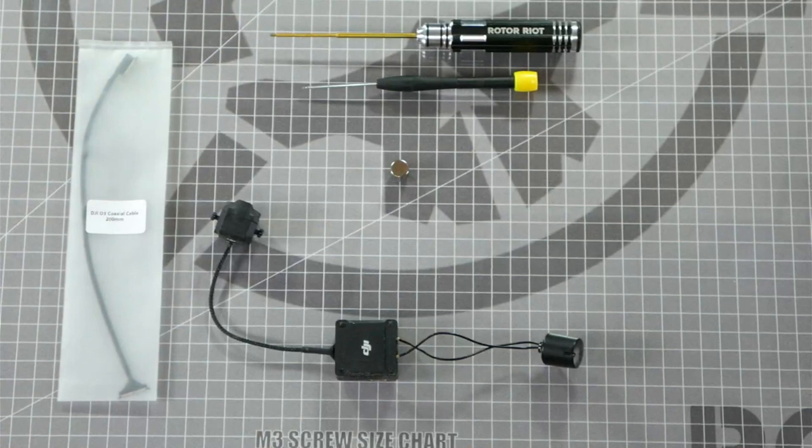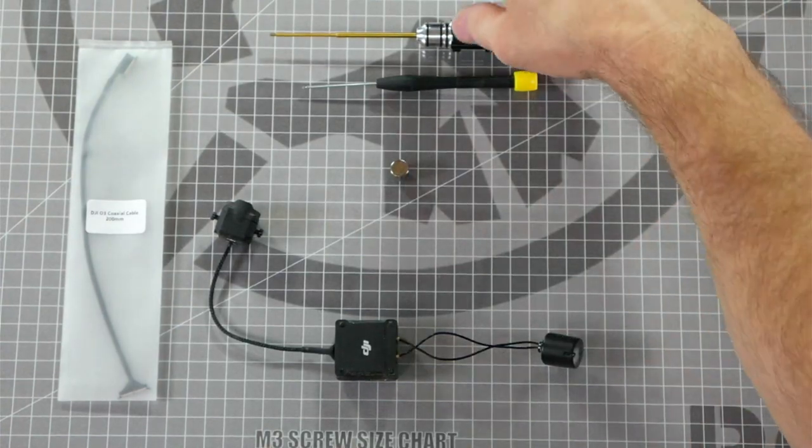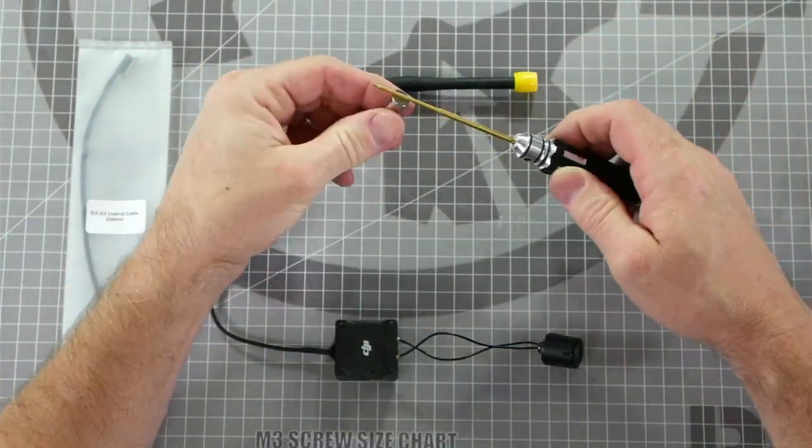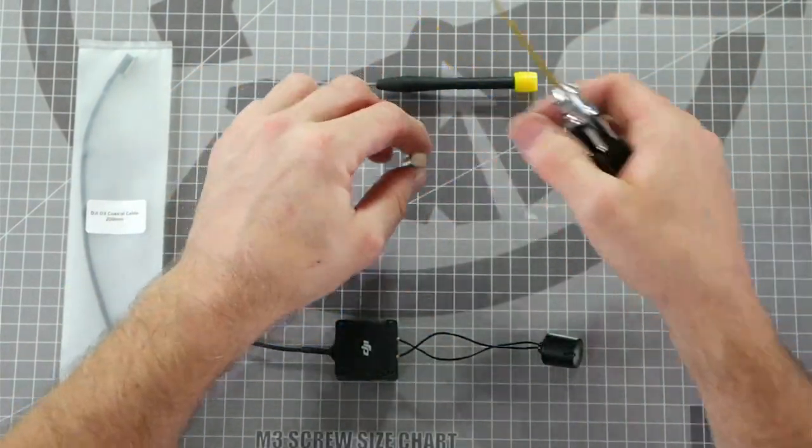The tools you will need for this are a tiny Phillips head screwdriver and a two millimeter hex driver. I like to use a magnet to hold all my screws so I don't lose them. It's also really good to magnetize your tools to help you with removing the screws.